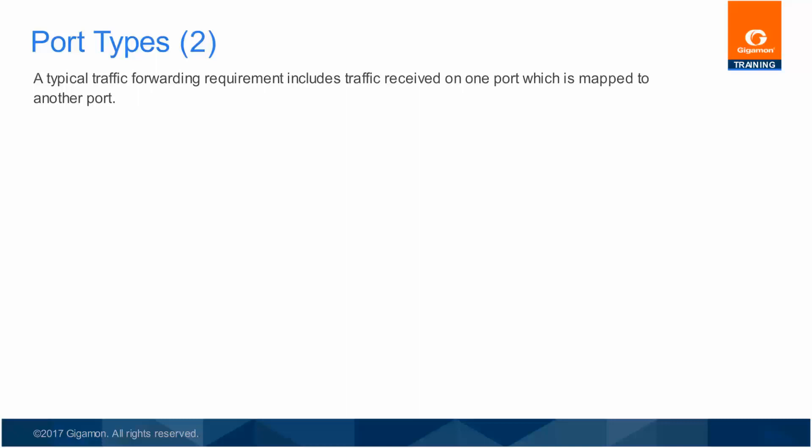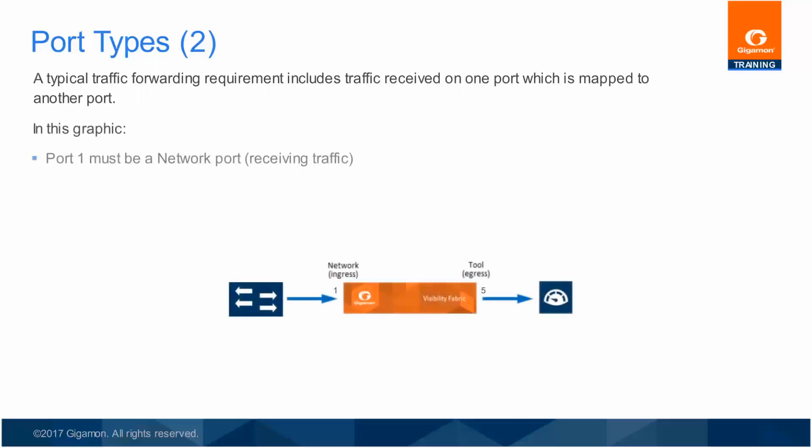A port type parameter must be set prior to using that port in a configuration. For example, if you have a monitoring or security tool attached to a port, the port type parameter for that port must be set to Tool before using that port as a traffic egress in a mapping configuration. In this graphic, traffic is received on network port 1 and forwarded out to port 5.